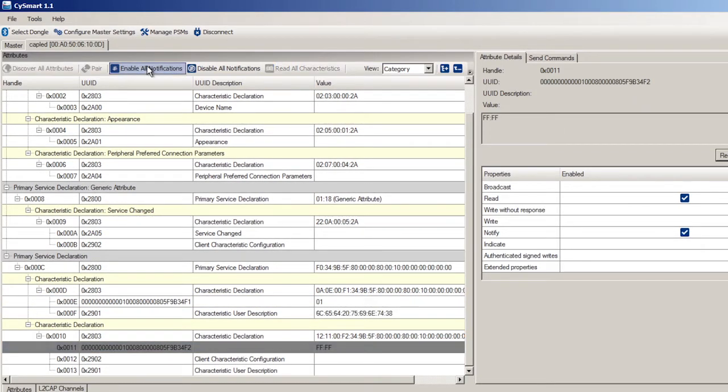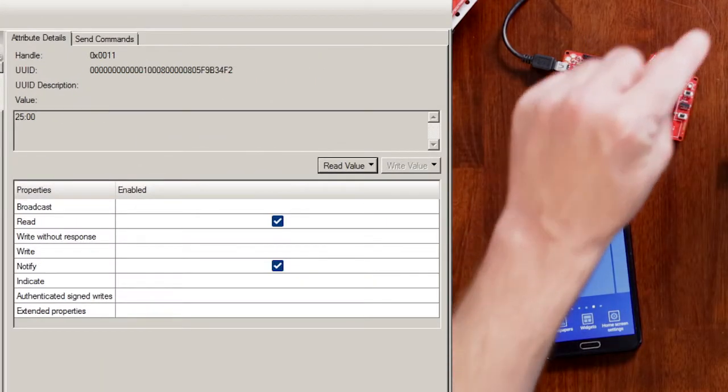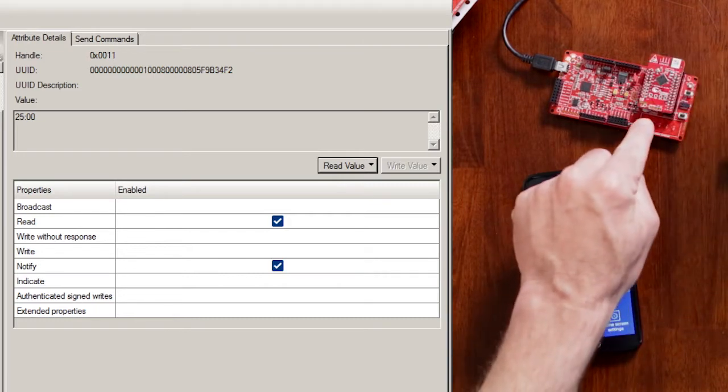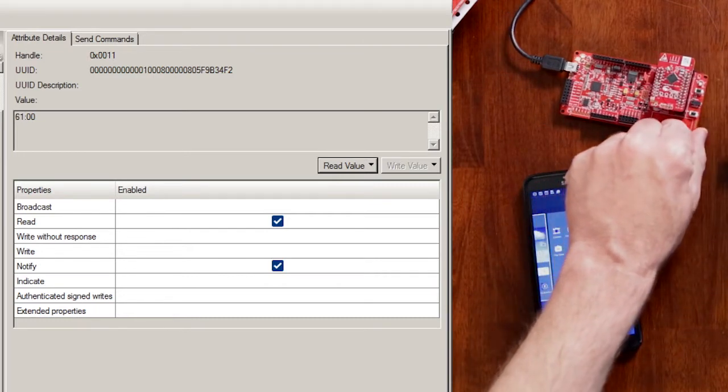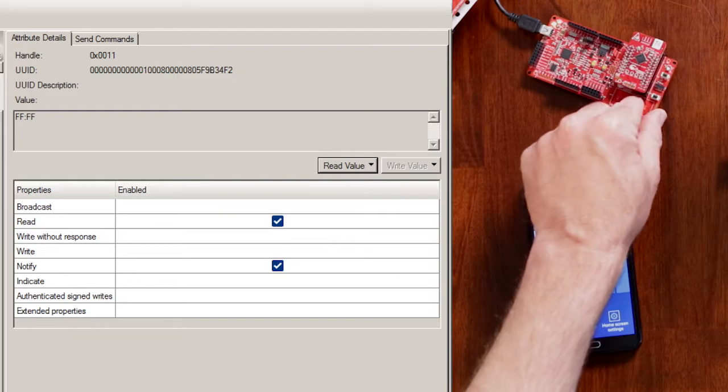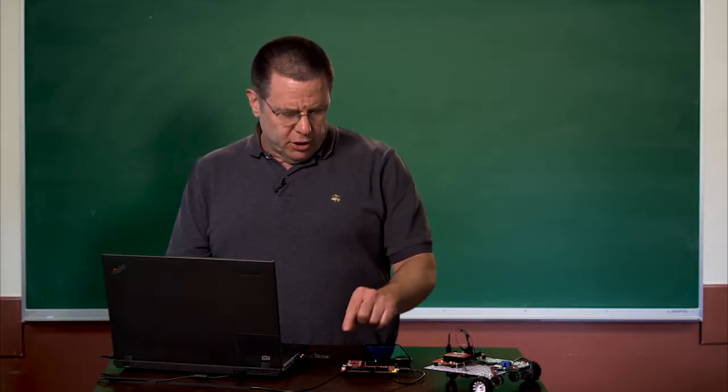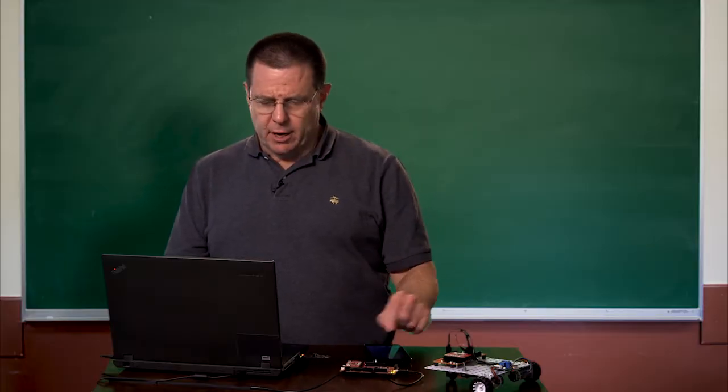The first thing I'll do is I'll enable all notifications and this will turn on the ability for the CapSense. I can see that when I move to one side, I get lower numbers. When I move to the other side, I get bigger numbers. So now I've shown that the CapSense slider works correctly.